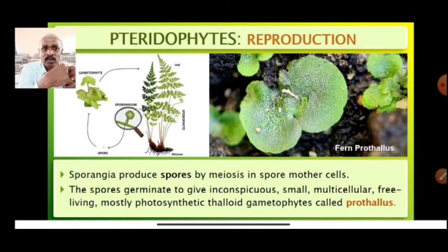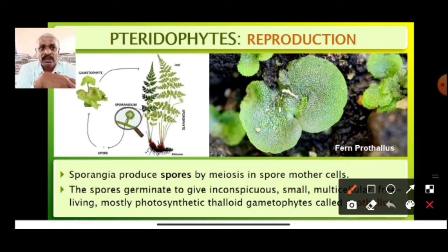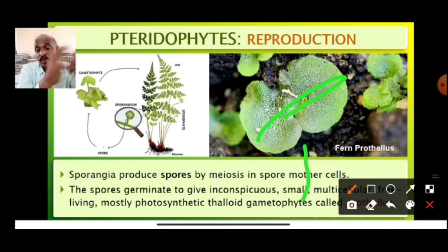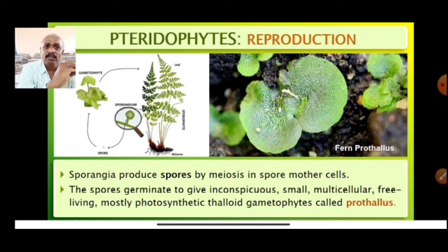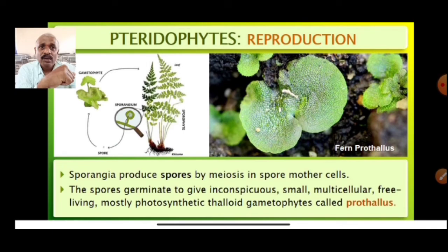The spores germinate to give inconspicuous, small, multicellular, free-living, mostly photosynthetic, thalloid gametophytes. These are called the prothallus. In bryophytes the body is called thallus, but here in pteridophytes we call it prothallus — it is different.